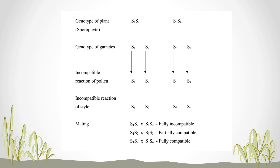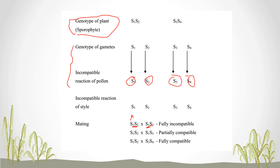In the sporophytic system, the genotype of the plant determines incompatibility. In the gametophytic system, each pollen is assigned a separate S-allele number — S1, S2, S3, S4. For example, a plant with alleles S1S2 crossed with another S1S3 plant shares the S1 allele, so it is only partially compatible. A cross between S1S2 and S3S4 — with completely different alleles — is fully compatible. You need at least one different allele to achieve any compatibility.